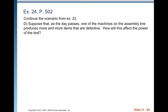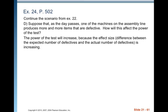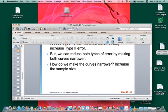Suppose that as the day passes, one of the machines on the assembly line produces more and more defective items. How will this affect the power of the test? The power of the test will increase because the effect size — the difference between the expected number of defectives and the actual number — is increasing. As it gets bigger and bigger, it's easier to detect, making the test more powerful. Come to class ready to work those problems. See you next time.